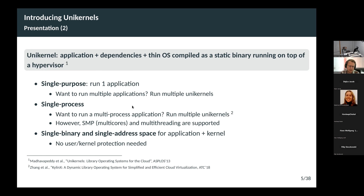Unikernels are single-purpose: each instance of a unikernel will run only one application. This means you have one instance of the kernel per application — this is a library operating system model, related to the exokernel proposal from the 90s. If you want to run multiple applications, you run multiple instances, multiple unikernels.